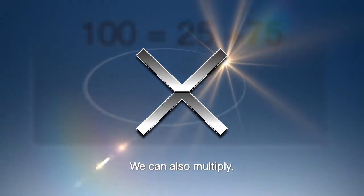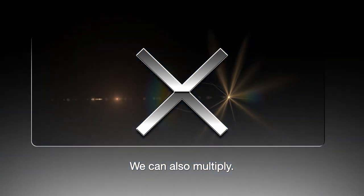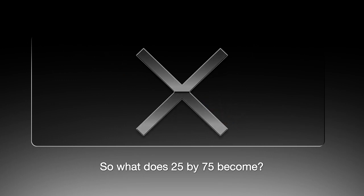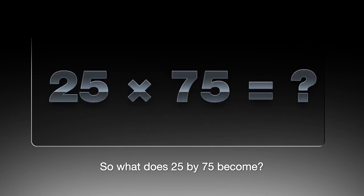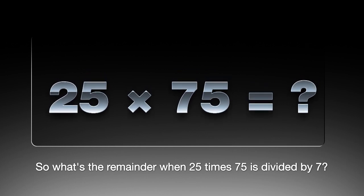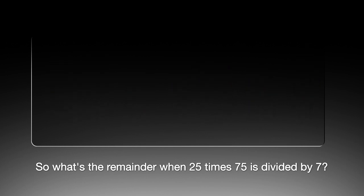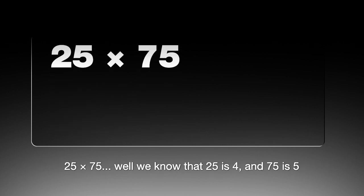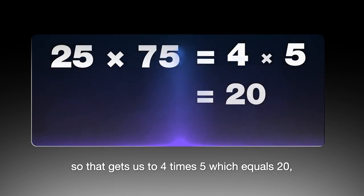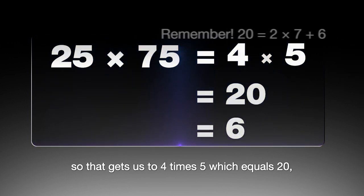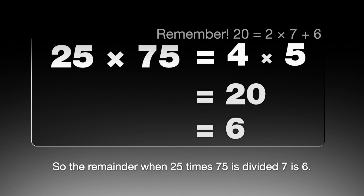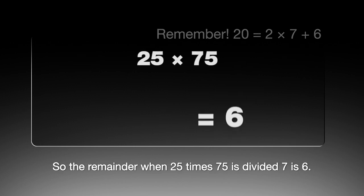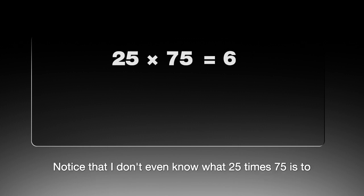We can also multiply. 25 by 75. So what does 25 by 75 become? So what's the remainder when 25 times 75 is divided by 7? So let's be lazy. 25 by 75. Well we know that 25 is 4, 75 is 5. So that gets us to 4 times 5 which equals 20, which equals 6. So the remainder when 25 times 75 is divided by 7 is 6. Notice that I don't even know what 25 times 75 is to work this out.